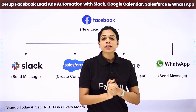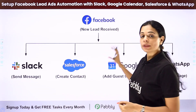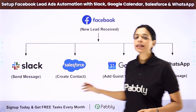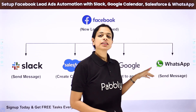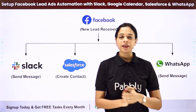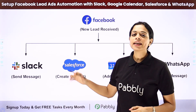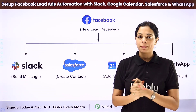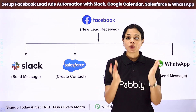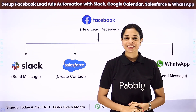How can you do this? You will have to set up some integration between Facebook, Slack, Salesforce, Google Calendar and WhatsApp, and the same thing can be done using Pabbly Connect software. With just one click, this entire thing would happen automatically. To understand that, let me take you to my screen.